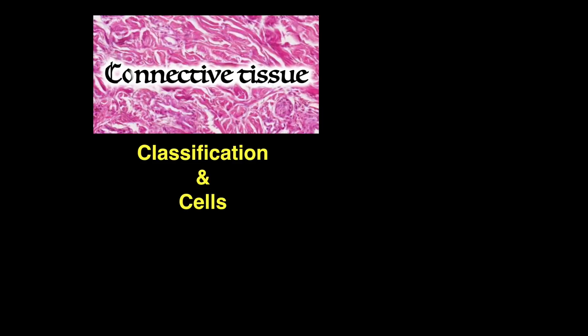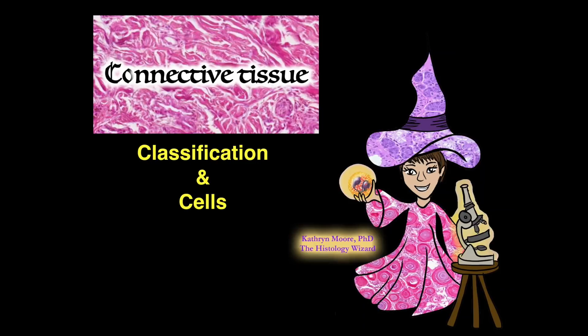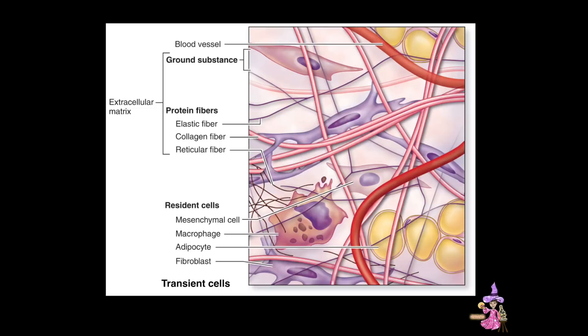Welcome to Connective Tissue Classification and Cells. I'm Dr. Catherine Moore, the Histology Wizard. The three components that make up connective tissue proper are fibers, a hydrated gel-like ground substance, and cells.